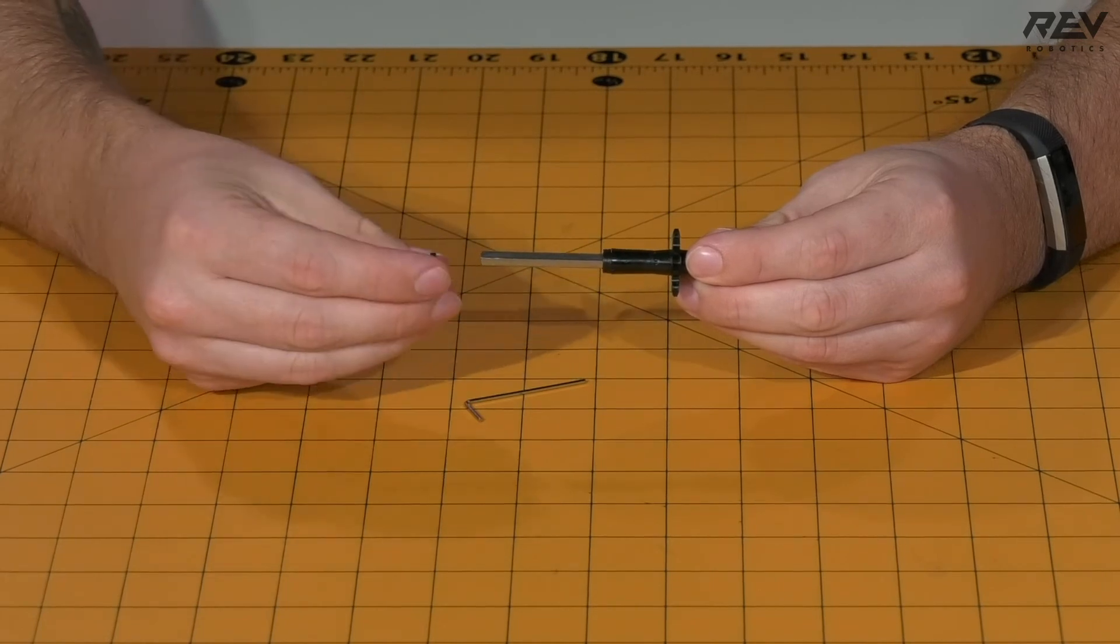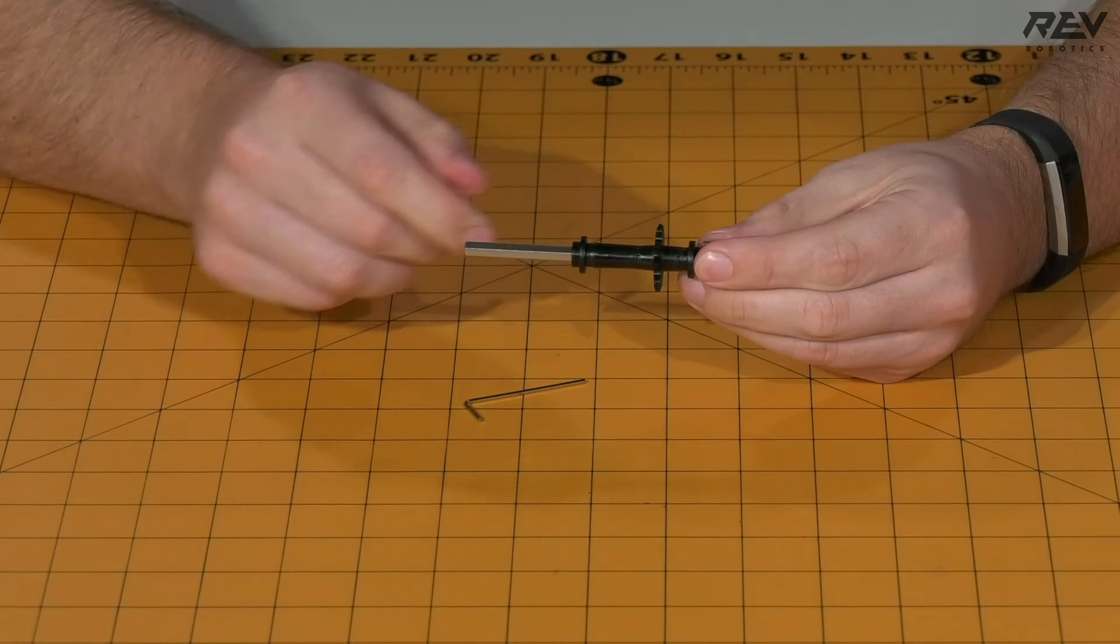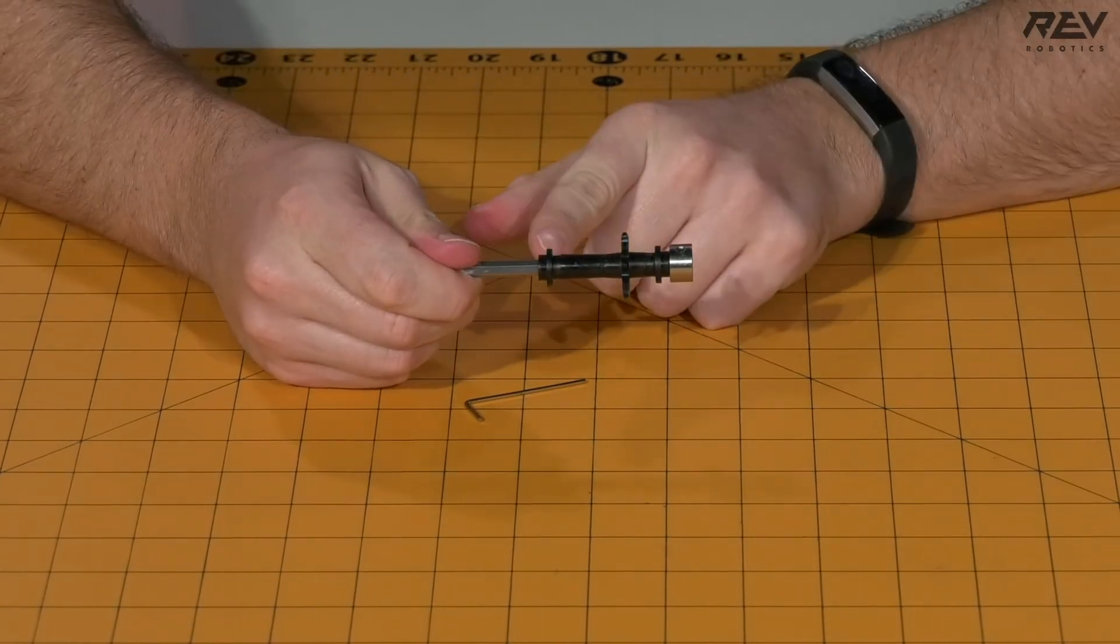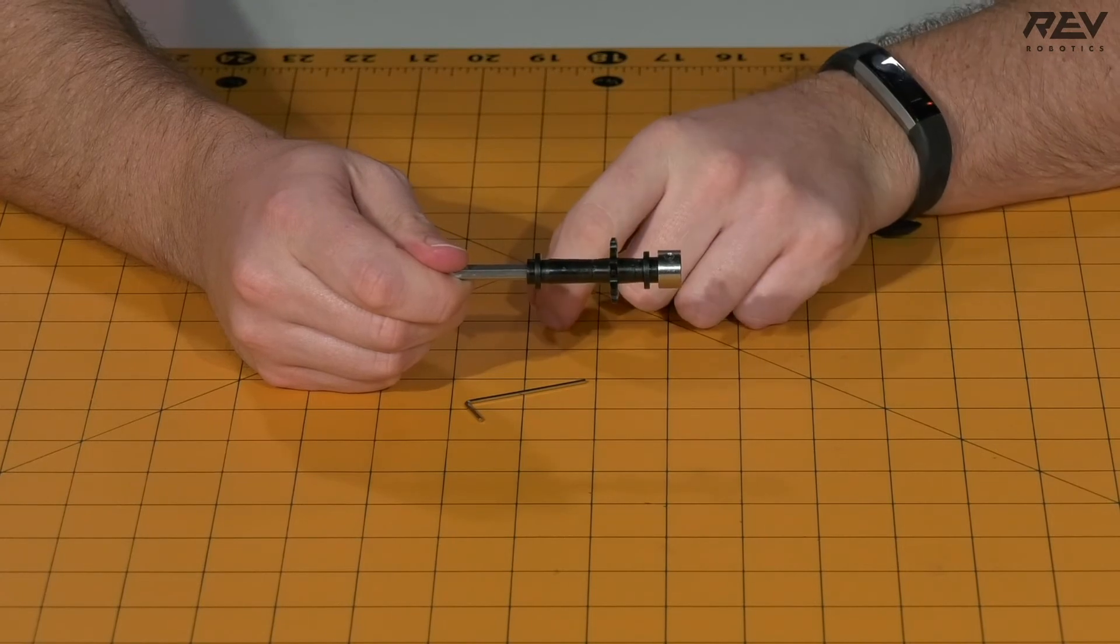Last piece is the remaining short through-bore bearing. You want to slide that on. Also note its orientation is the opposite of the orientation of the previous short through-bore bearing.